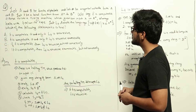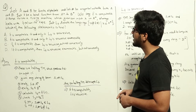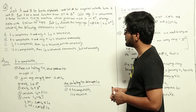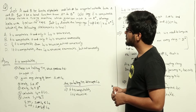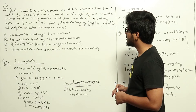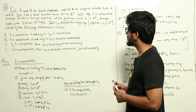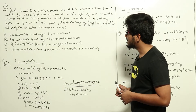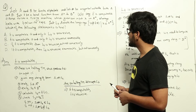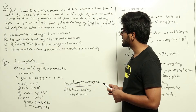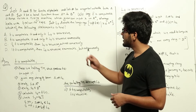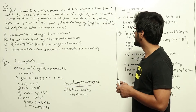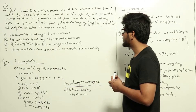Which of the following statements is true? (a) f is computable if and only if Lf is recursive. (b) f is computable if and only if Lf is recursively enumerable. (c) If f is computable then Lf is recursive, but not conversely. (d) If f is computable then Lf is recursively enumerable, but not conversely.